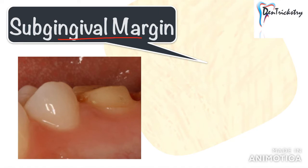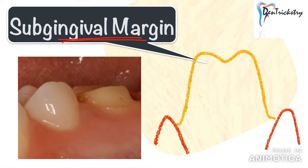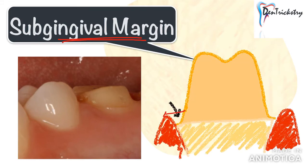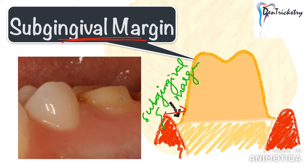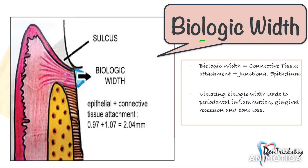You can attempt to increase the length of the tooth by placing a sub-gingival margin, but you need to take care that you don't go too deep below the gingival margin or you will end up violating the biologic width. In simple terms, biologic width is the combined height of connective tissue and the epithelial attachment of the tooth above the alveolar crest. For example, if your sulcus depth is 1.5 mm, place your margin only 0.5 to 0.7 mm sub-gingivally so you are on the safe side.